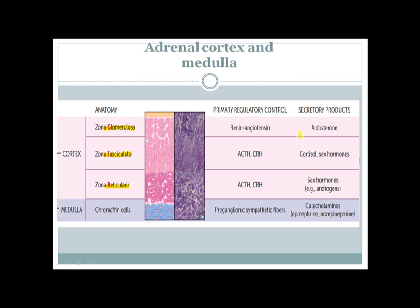Each of those layers has distinct hormone secretion. The zona glomerulosa secretes aldosterone, which is the salt and water conserving hormone. Zona fasciculata mainly secretes cortisol and zona reticularis mainly secretes the sex hormones or androgens. The medulla has cells called chromaffin cells, which secrete catecholamines.